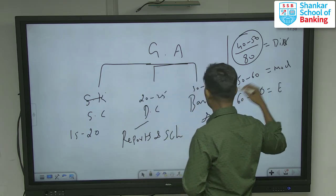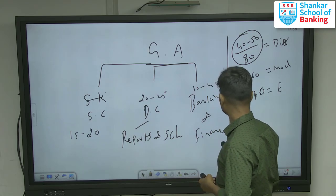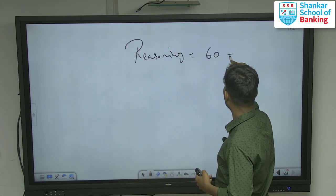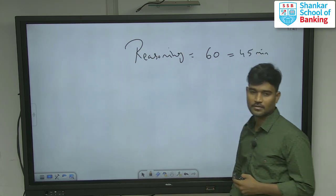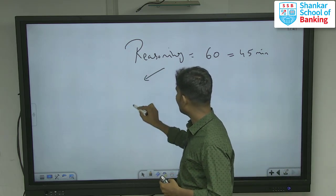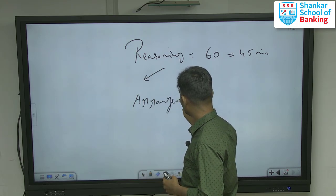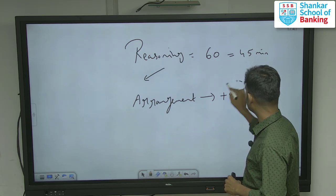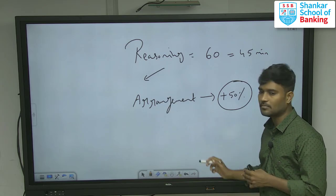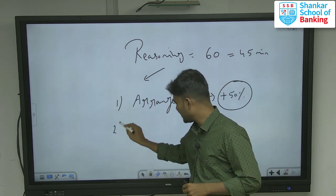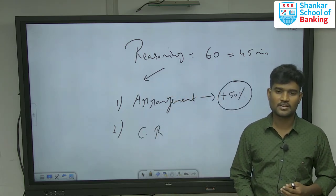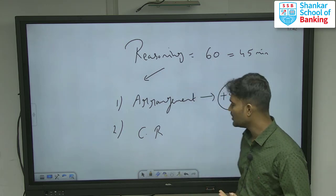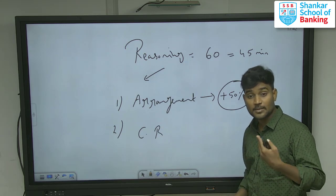Next is reasoning. They give 60 questions with 45 minutes of time. Among 60 questions, arrangement is very important. Once you are very strong in arrangement, you can attend more than 50% of the questions, since more than 50% of questions are from the arrangement topic. The second key area is critical reasoning — including course of action, cause and effect, statement assumption, statement argument, statement conclusion, and statement inference in passages.